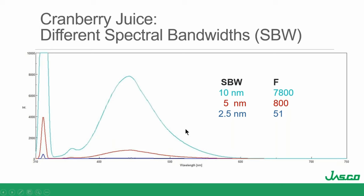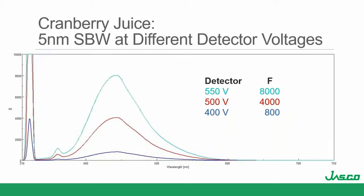The most important take-home here is: I get a lot of intensity by changing the spectral bandwidth. But do I need to go to 10 nanometers? I am starting to blur things — looking at the scatter band, you can see how much broadening you get going from 2 to 5 to 10 nm. It could be a big deal if you have a narrow Stokes shift.